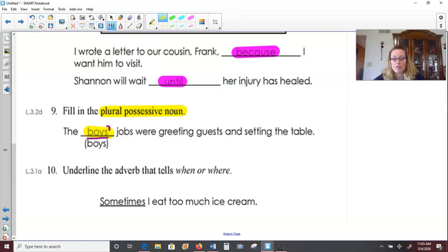And lastly here, number 10, underline the adverb that tells where or when. Remember, adverbs describe the verb. They describe the action. Sometimes I eat too much ice cream. That is true. It tastes so good when you're eating it and then you get a stomachache later. But when or where do I eat? Because eat would be the verb. Well, when do I eat too much ice cream? Sometimes. That's describing when I eat too much ice cream.